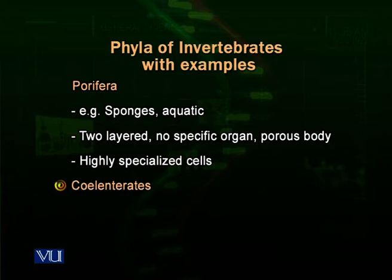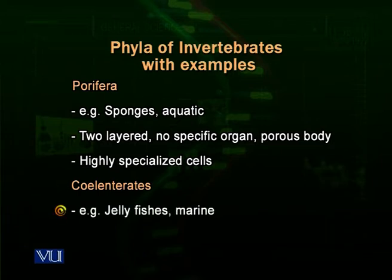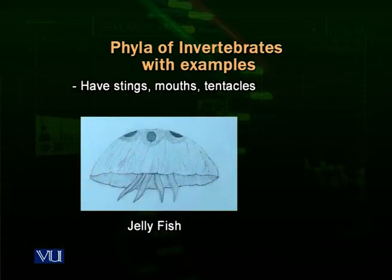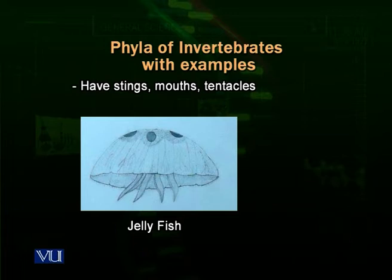The next group is called the Cnidaria — for example, jellyfish. These are mainly marine organisms, meaning they live in seas and oceans. They have some simple organs and do have a mouth. They have specialized organs called tentacles which help them in movement and collecting food from the environment. As you can see in a picture, a jellyfish has its tentacles below, which help it collect food and move.